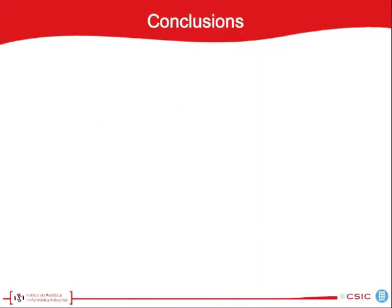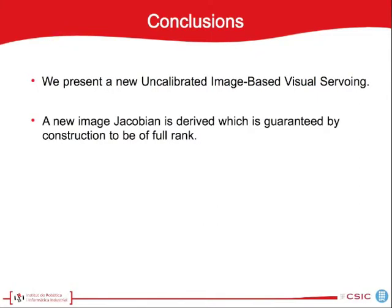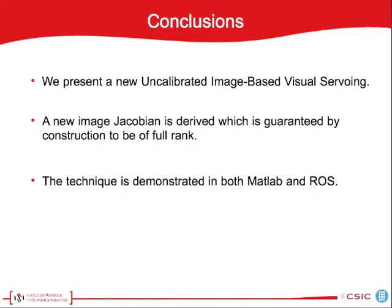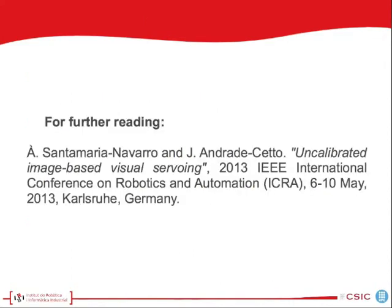To conclude, we have presented a new uncalibrated visual servo approach where a new image Jacobian is derived, which is guaranteed by construction to be full rank. Our method is demonstrated both in MATLAB and with ROS, and you will find our code at the address shown. Thank you very much for listening, and I hope you have enjoyed this talk.